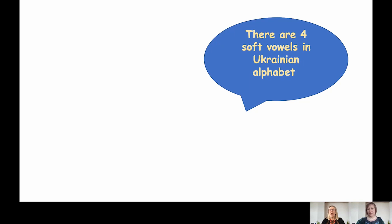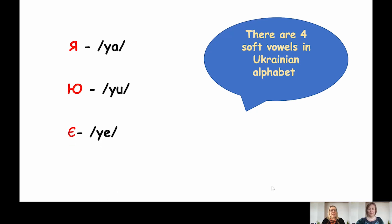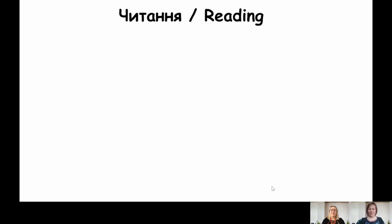There are four soft vowels in the Ukrainian alphabet. And now let's read some words with the vowels Я, Ю, Є, and Ї.